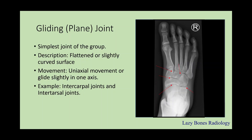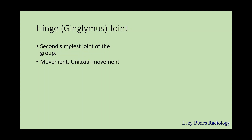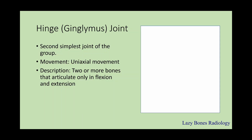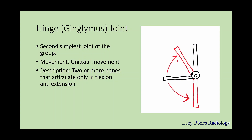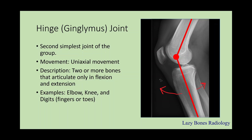The second is the hinge joint, the second simplest joint, which has uniaxial movement. This is when two or more bones articulate with only flexion and extension. Think of a door — opening and closing it is a hinge joint. Examples include the elbow, knee, and digits. As you can see here with the knee joint, you're able to flex and extend, and the same with the elbow.